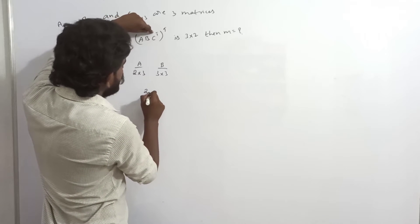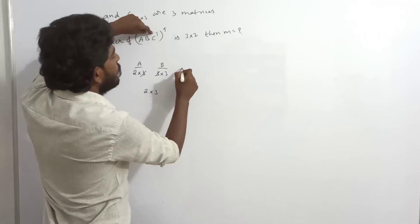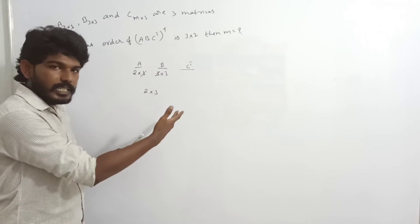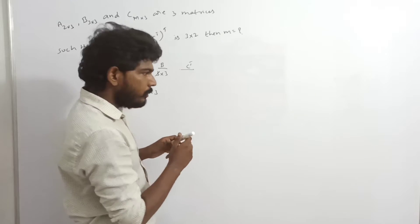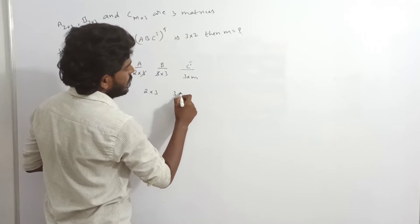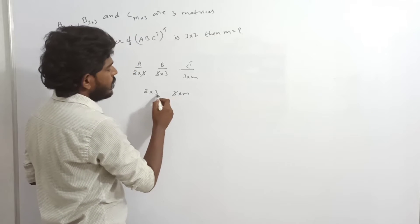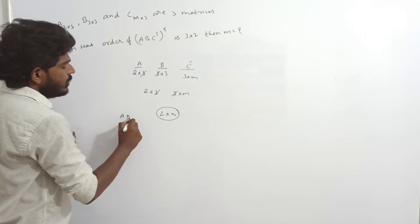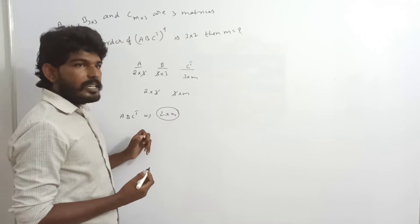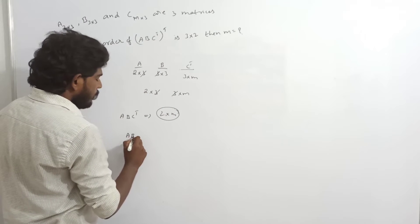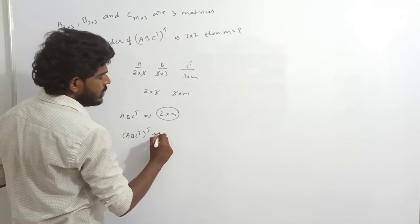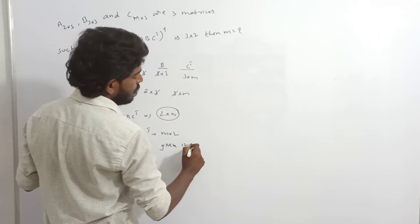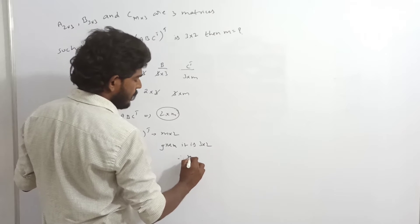C transpose is of order 3 by M. So we can multiply and ABC transpose order is 2 by M. That means ABC transpose whole transpose is of order M by 2. It is given as M cross 2 equals 3 cross 2, therefore M equals 3.